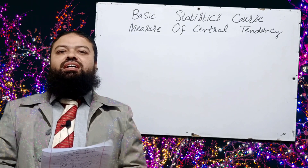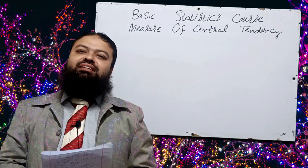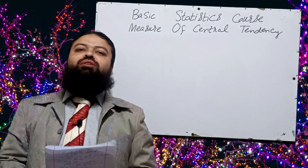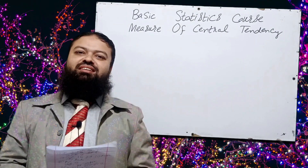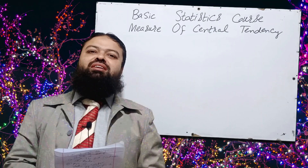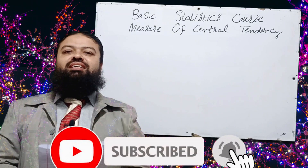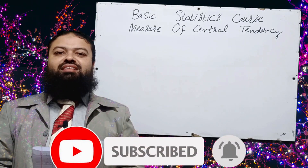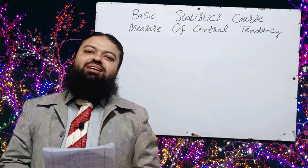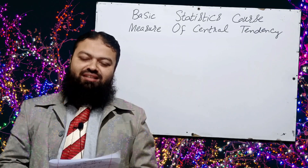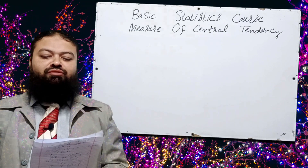This is lecture number five of the basic statistics course. The topic we have been covering since the last four lectures is measures of central tendency. Before starting today's lecture, I request everyone to subscribe to my channel, like and share, and click the bell icon for notifications of upcoming videos.